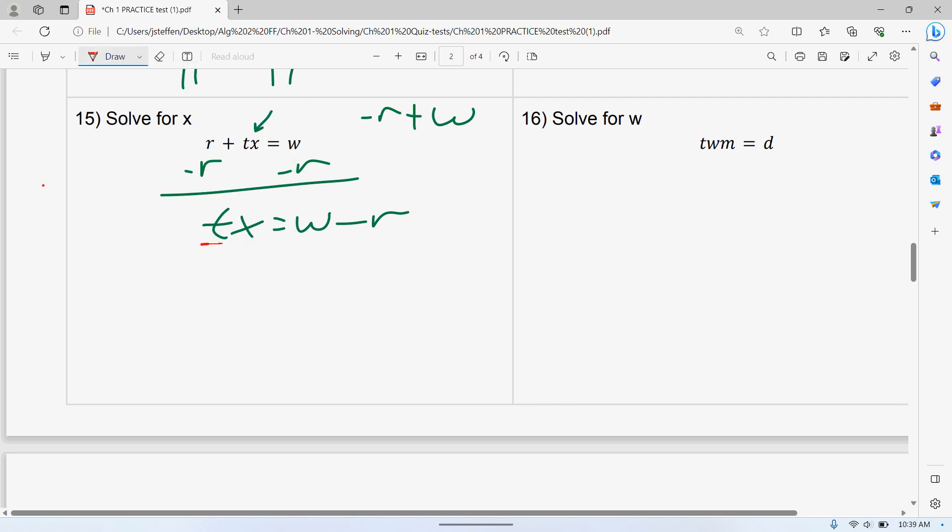So now to get the X by itself, I divide by T. So again, you can either divide everything by T, so you're going to put W over T minus R over T. Or you can put W minus R, the whole thing over T. It doesn't make any difference.